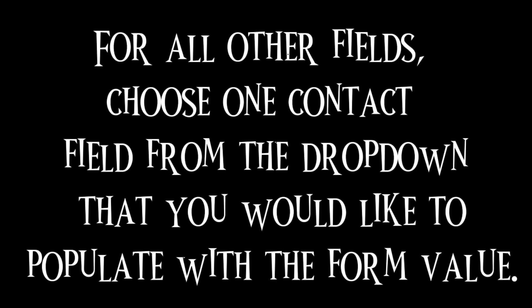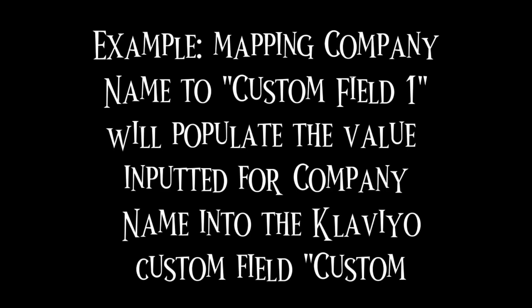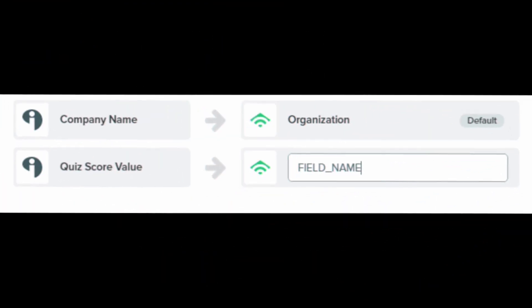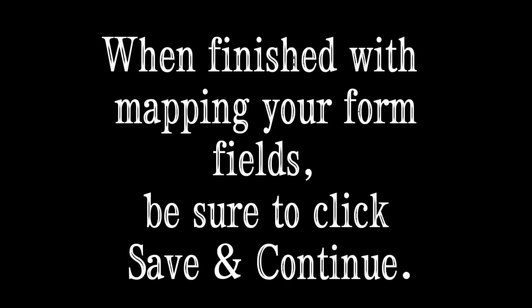Step 2: For all other fields, choose one contact field from the drop-down that you would like to populate with the form value. For example, mapping Company Name to Custom Field 1 will populate the value inputted for Company Name into the Klaviyo custom field. Step 3: When finished mapping your form fields, be sure to click Save and Continue.